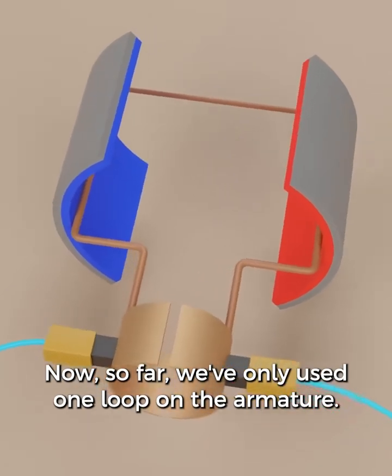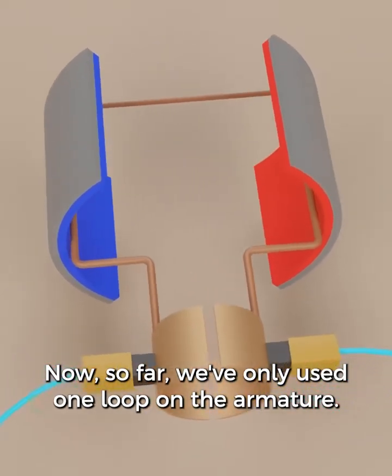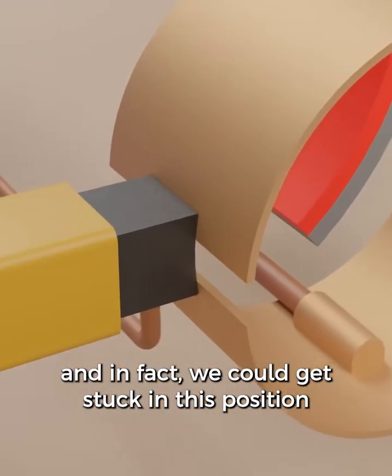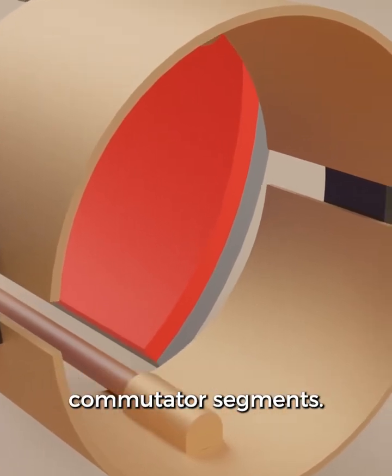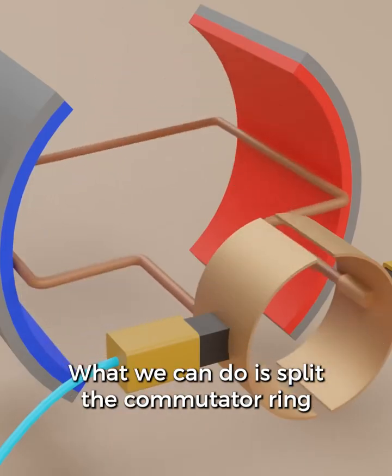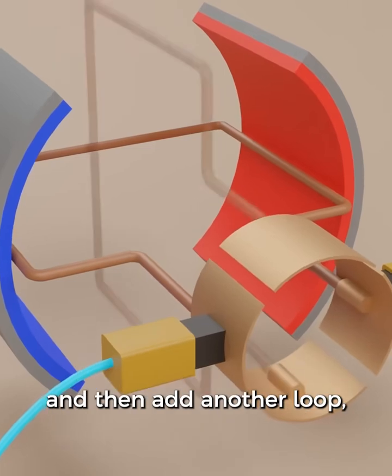Now, so far we've only used one loop on the armature. This will cause our motor to have an irregular speed and in fact, we could get stuck in this position with the brushes halfway between commutator segments. What we can do is split the commutator ring and then add another loop.